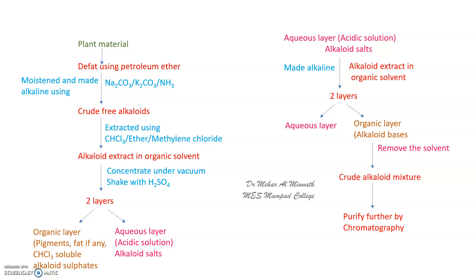The crude alkaloid mixture is then subjected to chromatographic methods to separate and obtain pure alkaloids. You can use column chromatography, gas chromatography, or vapor-phase chromatography, depending on your alkaloid and convenience. This is the first method.